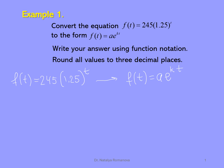From the given information, we have coefficient a. Coefficient a equals 245. We have coefficient b equals 1.25. But for our continuous form, we must have e to the power of kt. So we have to find the value of k. We can write the equation: 1.25 must equal e to the k.